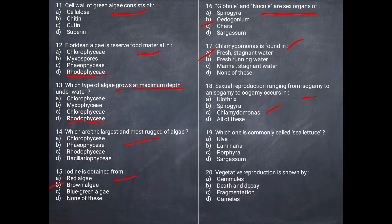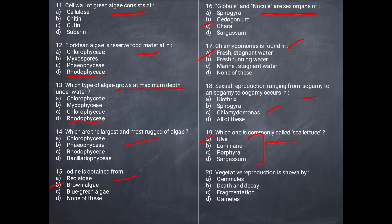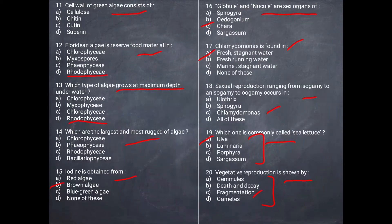Next question: Which one is commonly called sea lettuce? It is called Ulva — Ulva's common name is sea lettuce. Next question: Vegetative reproduction shown by fragmentation — fragmentation is a form of vegetative reproduction.